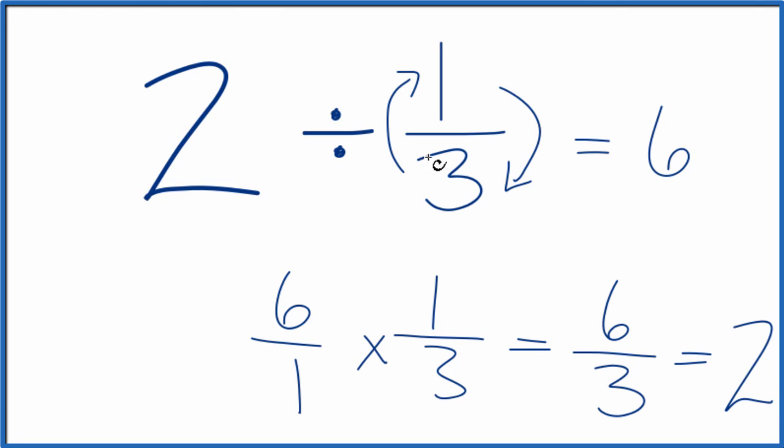So we know we correctly divided two by one-third and got six. This is Dr. B.